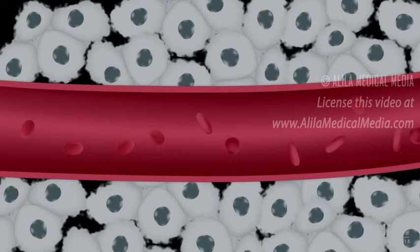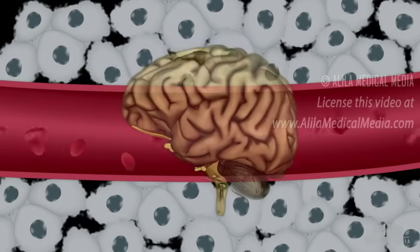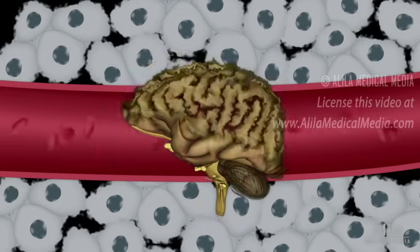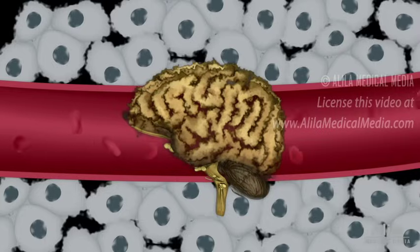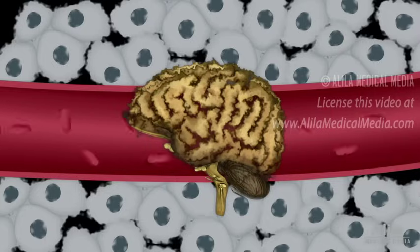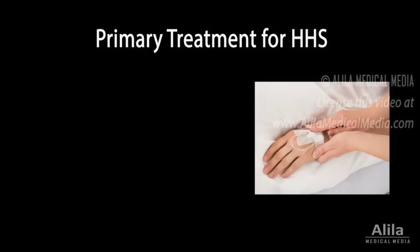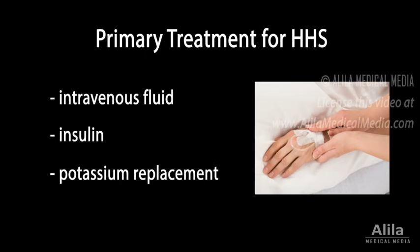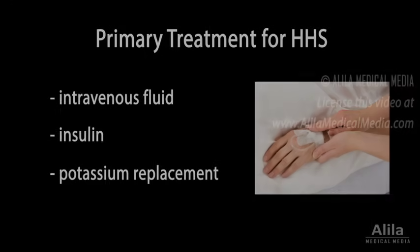The primary symptom of HHS is altered consciousness due to excessive dehydration of brain tissues. This can range from confusion to coma. Emergency treatment consists of intravenous fluid, insulin, and potassium, similar to those used in DKA.